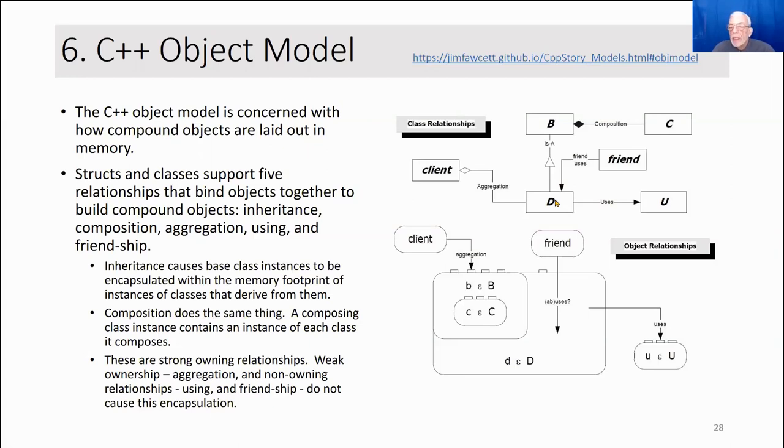So D uses an instance of the U class, but D doesn't own it. Some other entity created it. Perhaps the client created it. The client has created an instance of the D compound object, and it's doing that through aggregation.